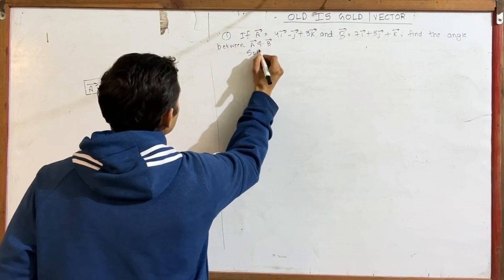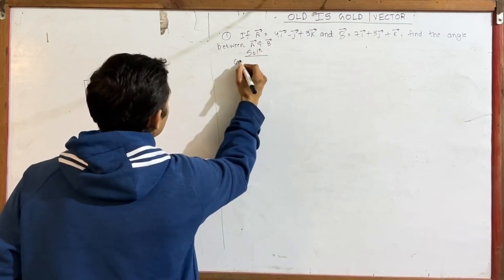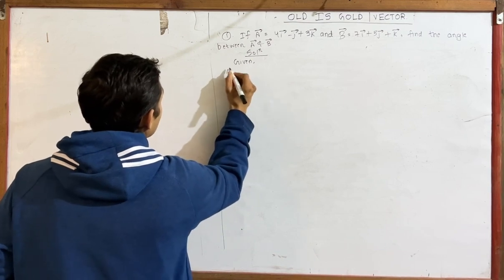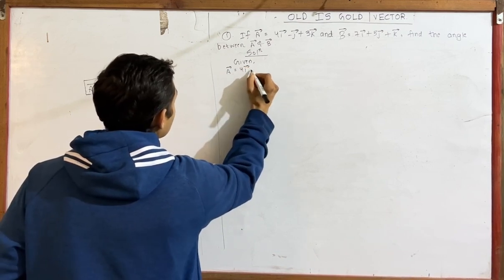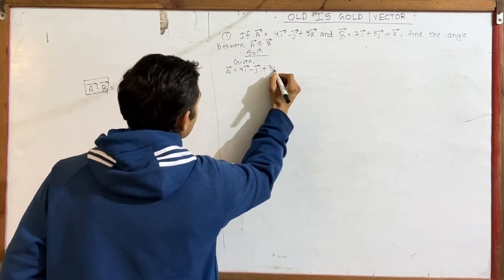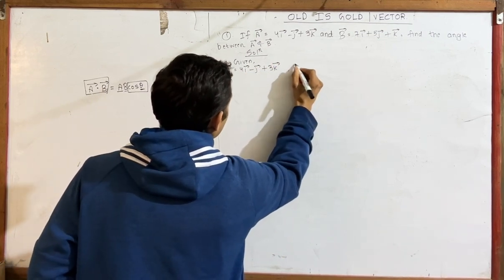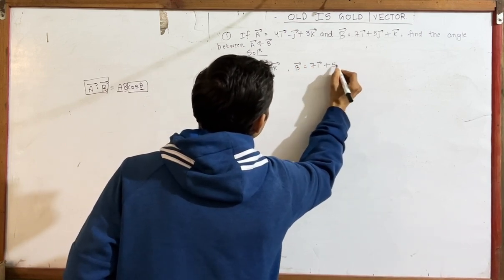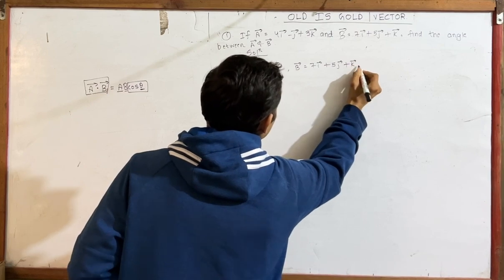So first I will write the solution. I will write: A vector equals 4i vector minus j vector plus 3k vector. And B vector equals 7i vector plus 5j vector plus k vector.